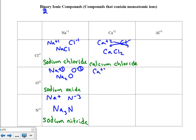Next, calcium and oxide. If you were to do the crisscross method, you would think that the formula would be Ca₂O₂. But this 2 to 2 ratio is reducible, so we actually rewrite this as just CaO. The name of this compound is calcium oxide.